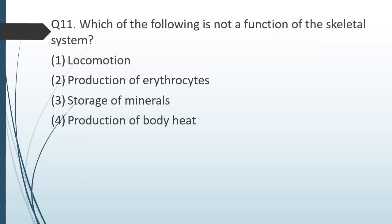Question number eleven: which of the following is not a function of the skeletal system — locomotion, production of erythrocytes, storage of minerals, or production of body heat? The correct answer is option four: production of body heat is not a function of the skeletal system. Locomotion is possible due to joints, bones, and muscles. Bone marrow produces RBCs and WBCs, so production of erythrocytes is a function. Calcium and phosphates are deposited on bones, so storage of minerals is also a function. However, production of body heat is not related to the skeletal system.